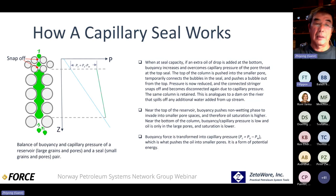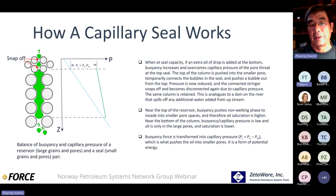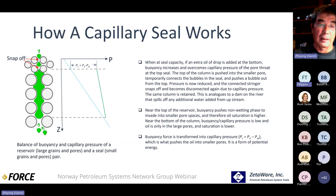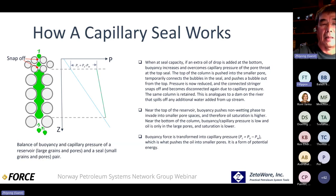This happens at a column scale of tens of meters, but also at microscopic scales. If there's a pore-throat size difference — like a stringer — there's a capillary front that gets stopped at the pore throat, just enough pressure to hold that column.